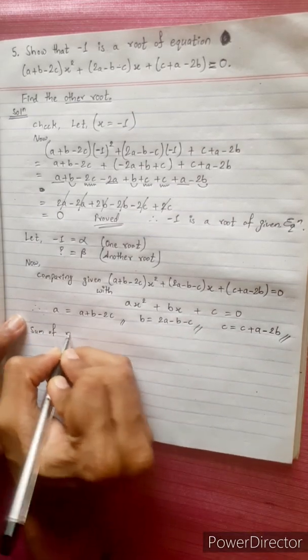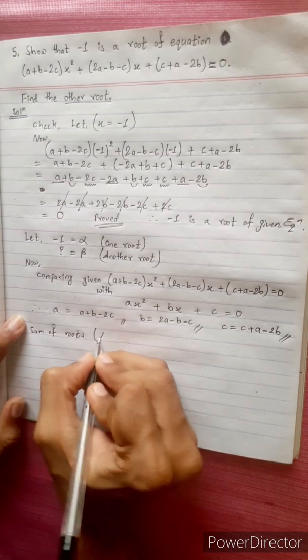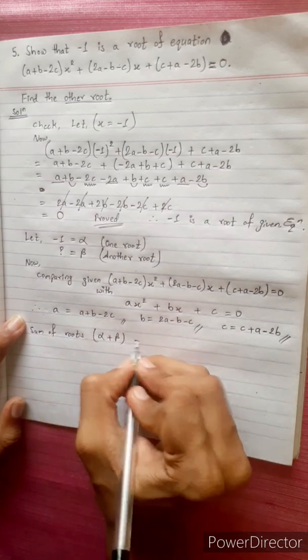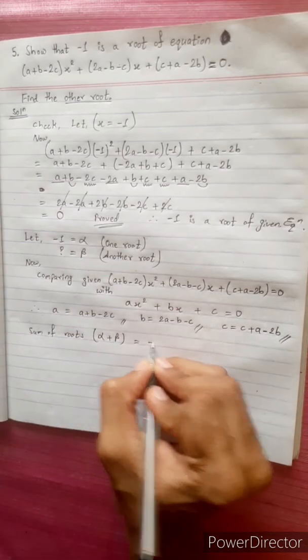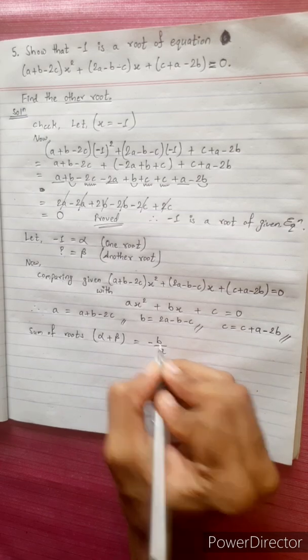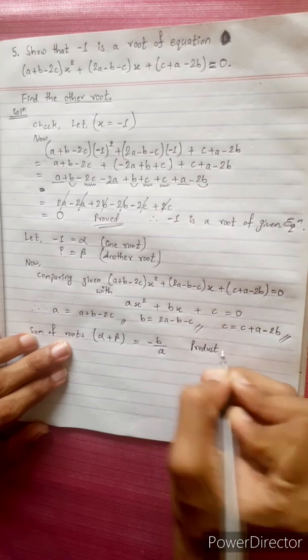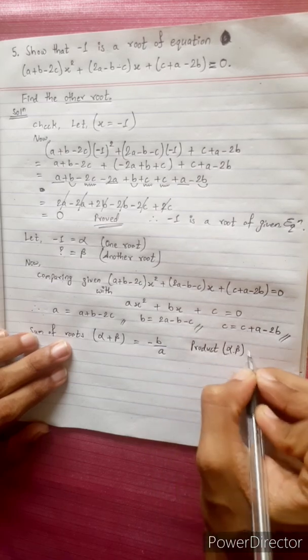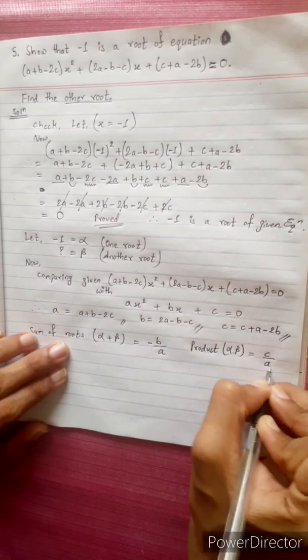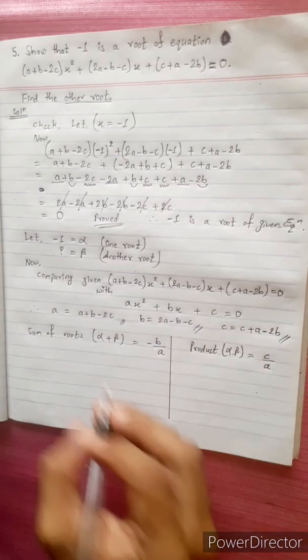Sum of roots. Sum of roots koneko. Alpha plus beta. Kyo koneko. Minus B by A. Minus B by A yo. A above legings b. Ani yi yi yi yi pani product of root pani lehii. Product of root. Voneko alpha into beta. Equals to. Cya. Yo formula. Or.